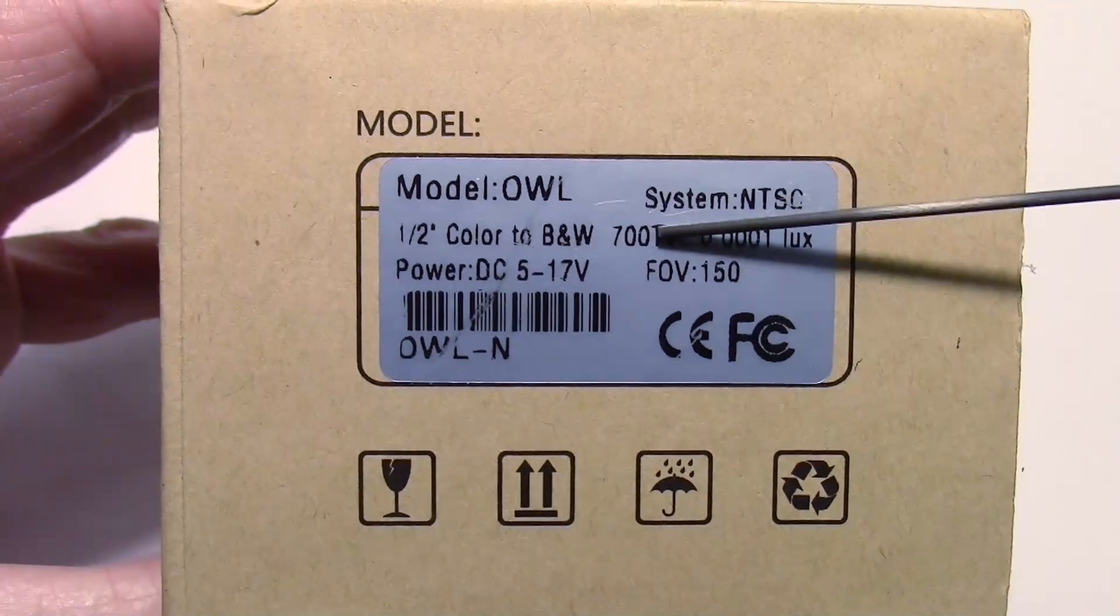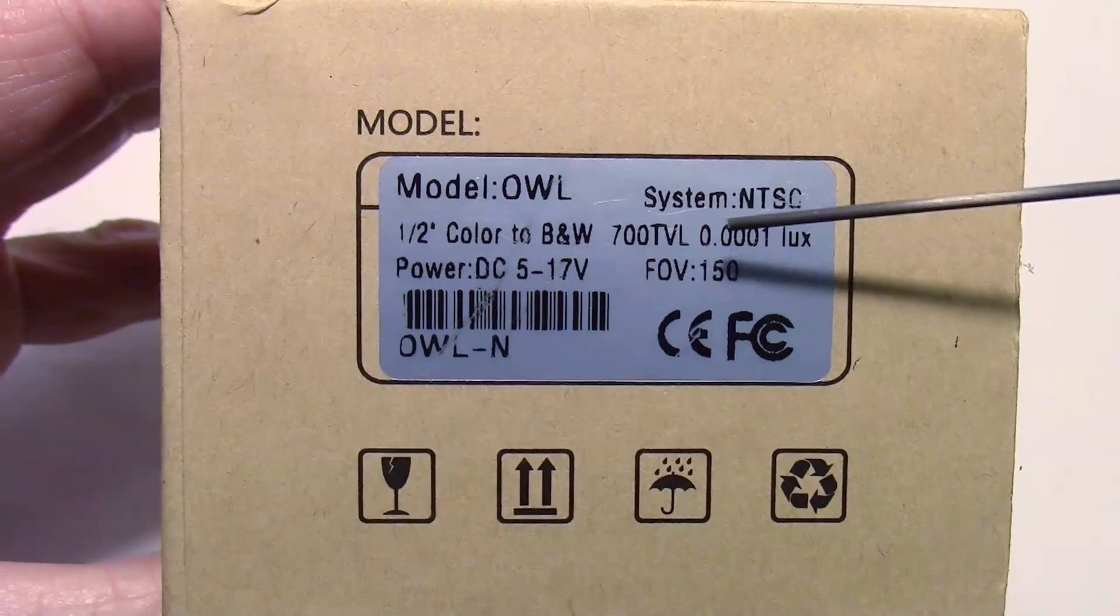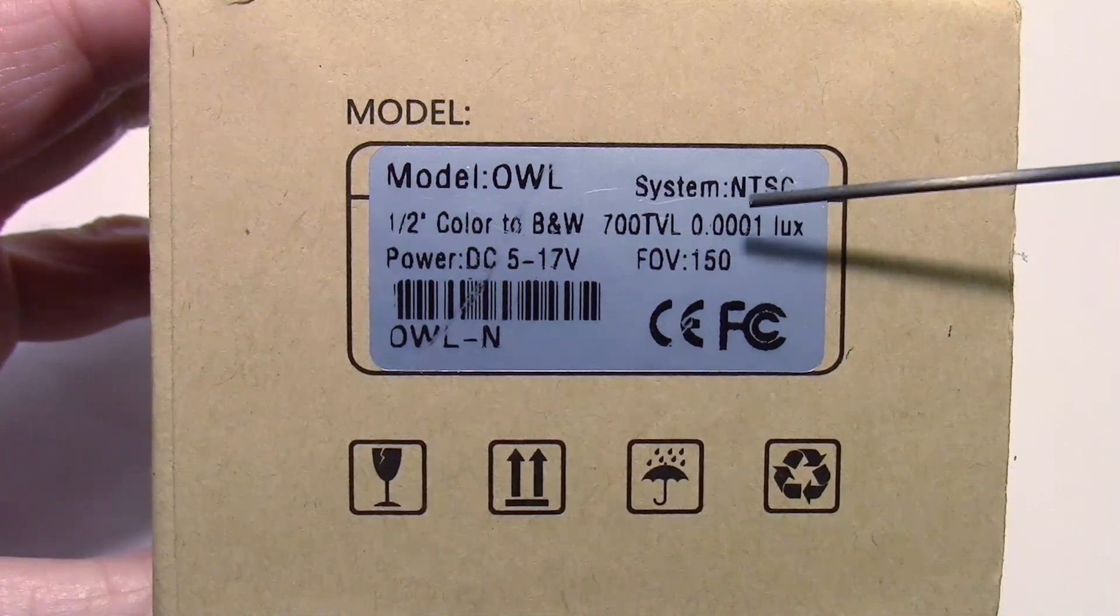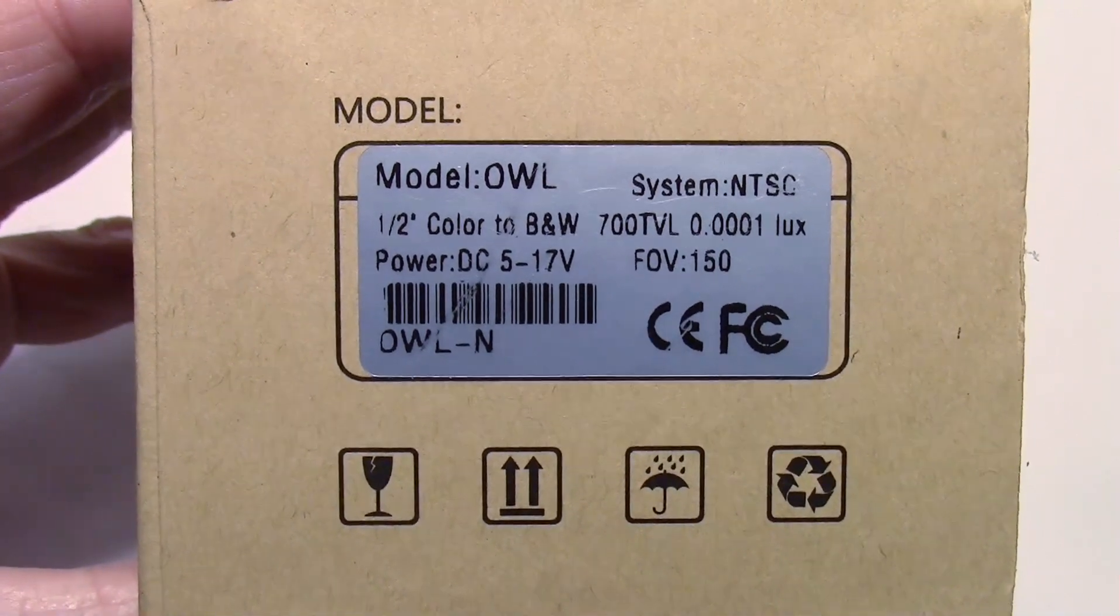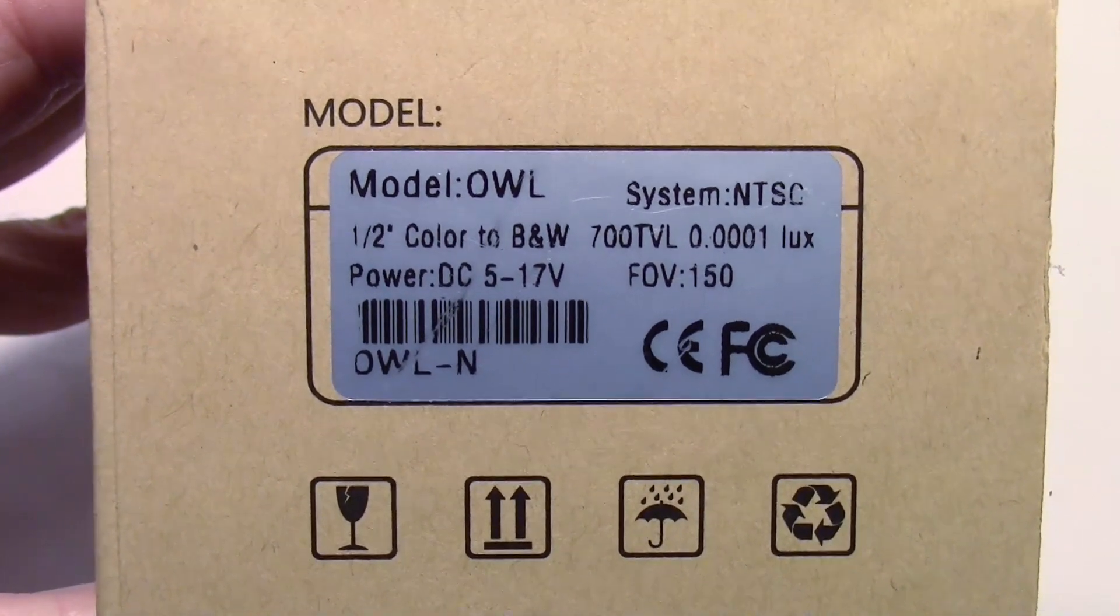It's NTSC, at least mine is. I think there's a PAL version available as well. It's 700 TV line, and here's the important part: it's a 0.0001 lux camera, so it's supposed to be good for low light. Just how good, we're going to find out.